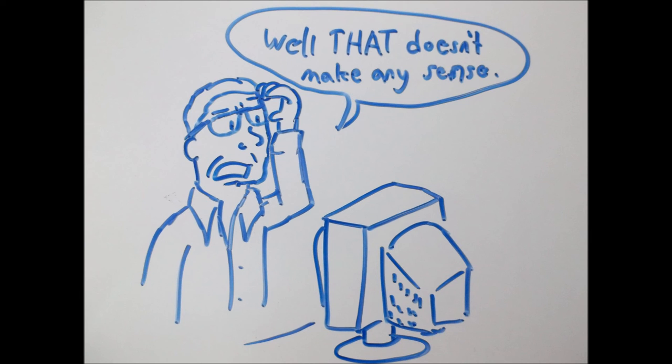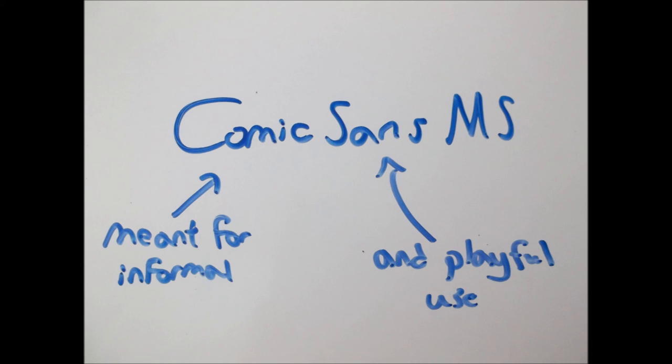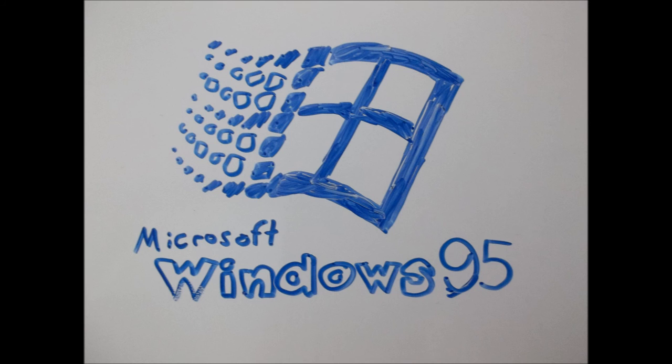Conair found this to be completely out of place, and so he designed Comic Sans with the intent of using it for informal and playful use. When Microsoft picked it up and released it in their Windows 95 package, it became a prominent font in the following packages from then on.